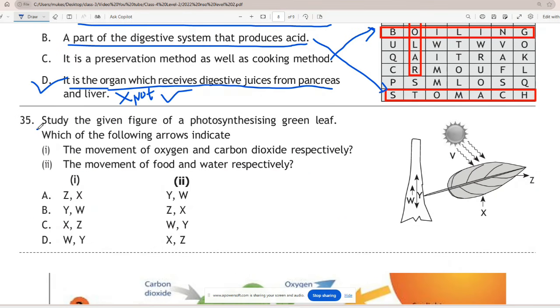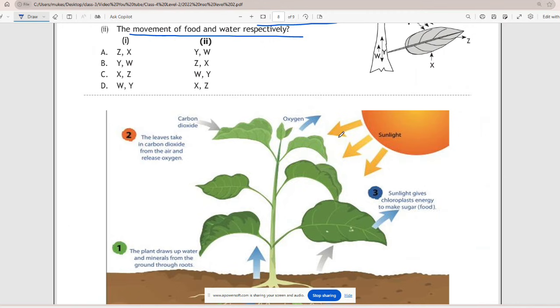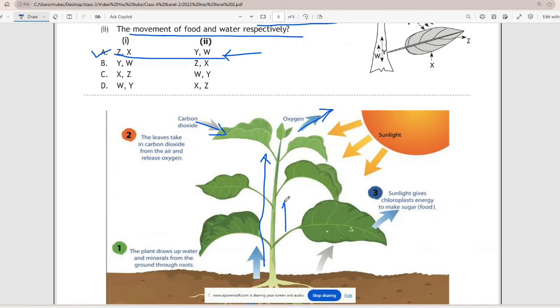Question 35: Study the given figure of a photosynthesizing green leaf. Which of the following arrows indicate? Considering the given image, oxygen moves outward and carbon dioxide moves inwards. Water moves from the roots to the leaves in a plant, while food moves in both directions. So the correct answer is A - Z is oxygen moving outward and X is carbon dioxide moving inwards. Food, Y, moves in both directions and water, W, moves upwards. Now we have solved all 35 questions.